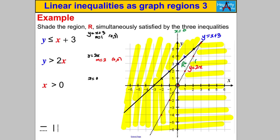Let's test the point (1, 3) inside region R. Is 3 ≤ 1 + 3? Yes, 3 ≤ 4. Is 3 > 2 × 1? Yes, 3 > 2. Is 1 > 0? Yes. The point satisfies all three inequalities, confirming we've identified the correct region R. That's it for this video — thanks for watching!